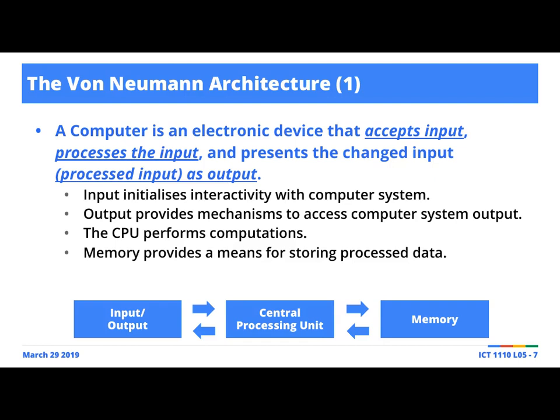You notice that the von Neumann architecture aligns to those core elements of what we define as a computer: a device that accepts input, processes the input, and presents the changed input as output. There's an optional phase associated with storage of data that's been processed. Visual representation: a human being typing on a computer is input; those signals are sent to the CPU where they are processed. If you're typing in Microsoft Word and click Save, a document is saved to memory. Then there's a cyclic process where you see what you've typed — it's presented as output.